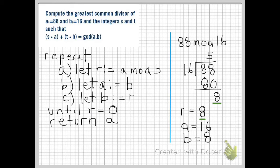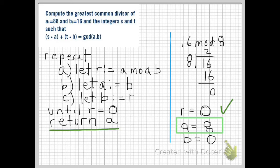Now this time we have 16 mod 8, r equals 0, a equals 8, and b equals 0. Now this time r equals 0, so we end the loop and we return a, which is 8. So the GCD of 88 and 16 equals 8.